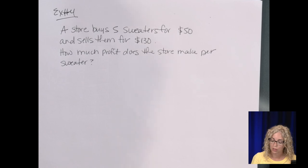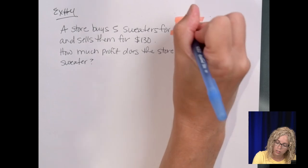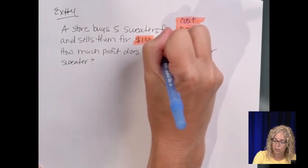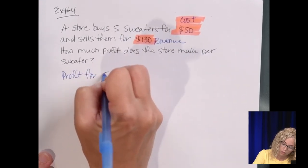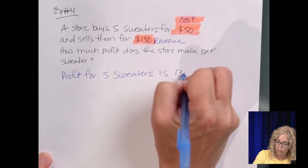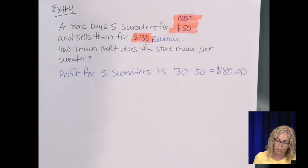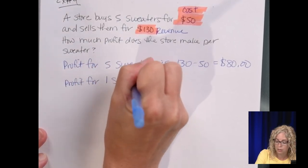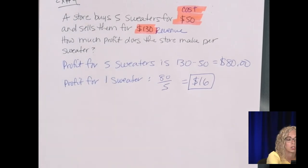So let's break this down. A store buys five sweaters for $50, so they have a cost, their cost is $50. And then when they sell them for $130, that's how much money's coming in, which is called revenue. So their profit, total profit for five sweaters is $130 minus $50, which is $80, because that's for the five sweaters. Now, if we want to find the profit per one sweater, we simply just take $80 and divide it by five, and we get $16. That's the profit for just one sweater, so that's your rate.